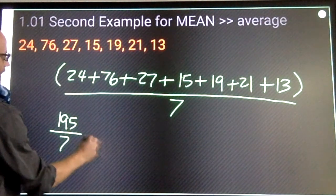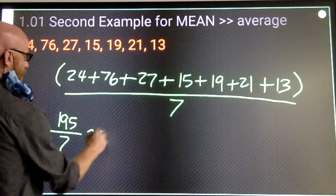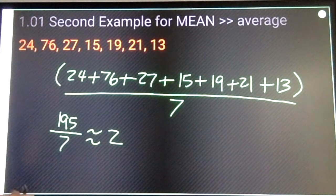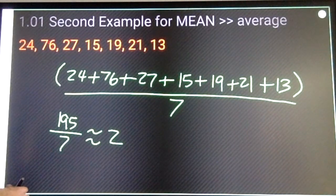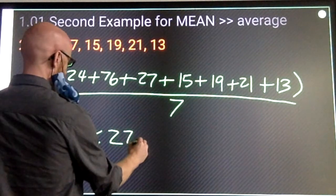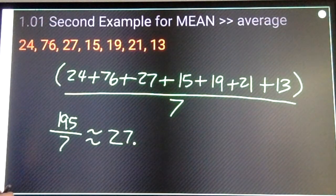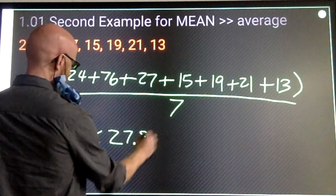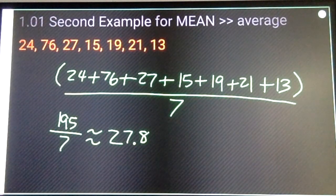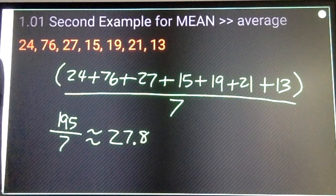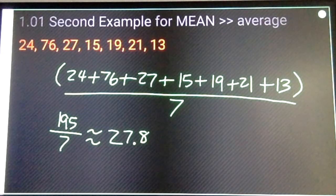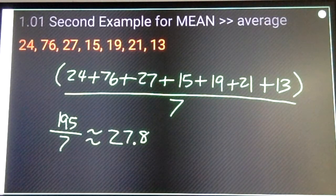I'll put my squiggly equal sign again because we're probably going to be approximate. About 27.8 as a mean. And for our purposes, Algebra 1, you can cut it after your first decimal place.